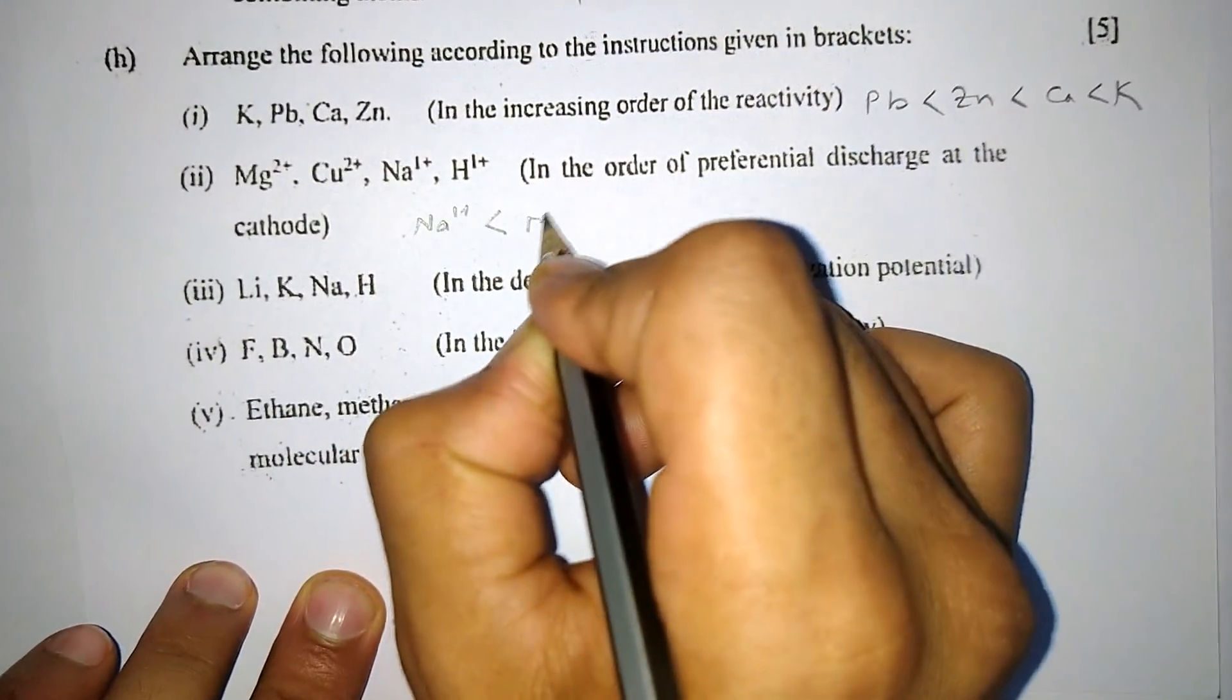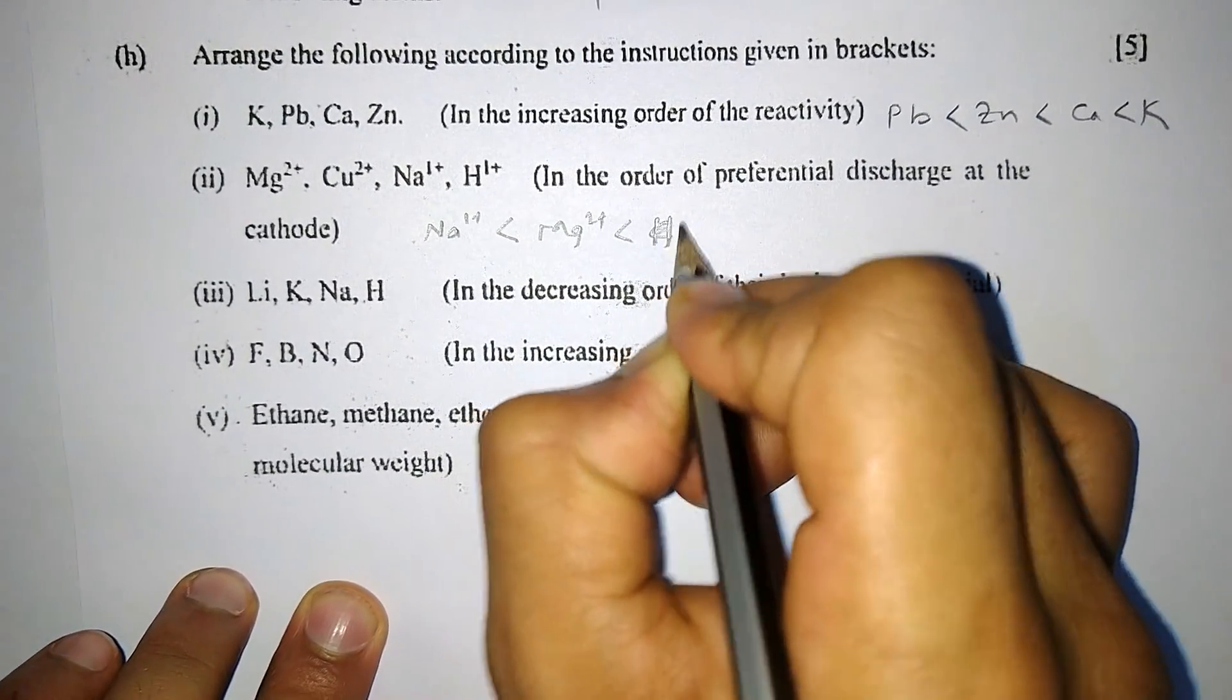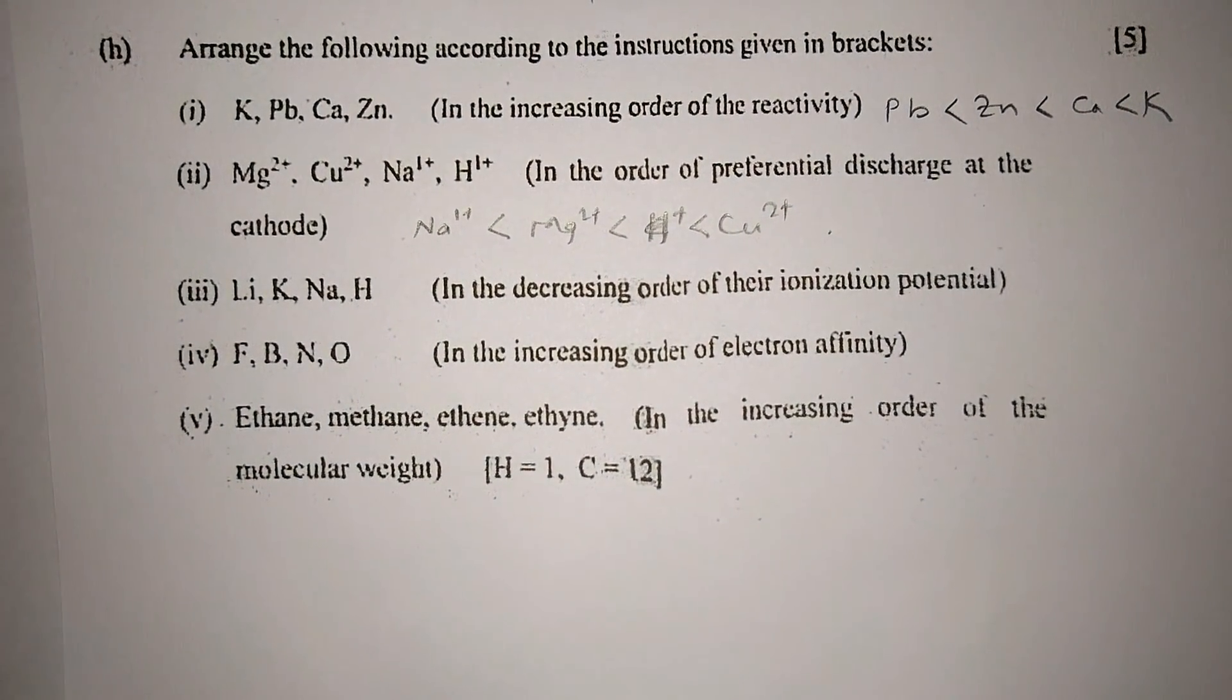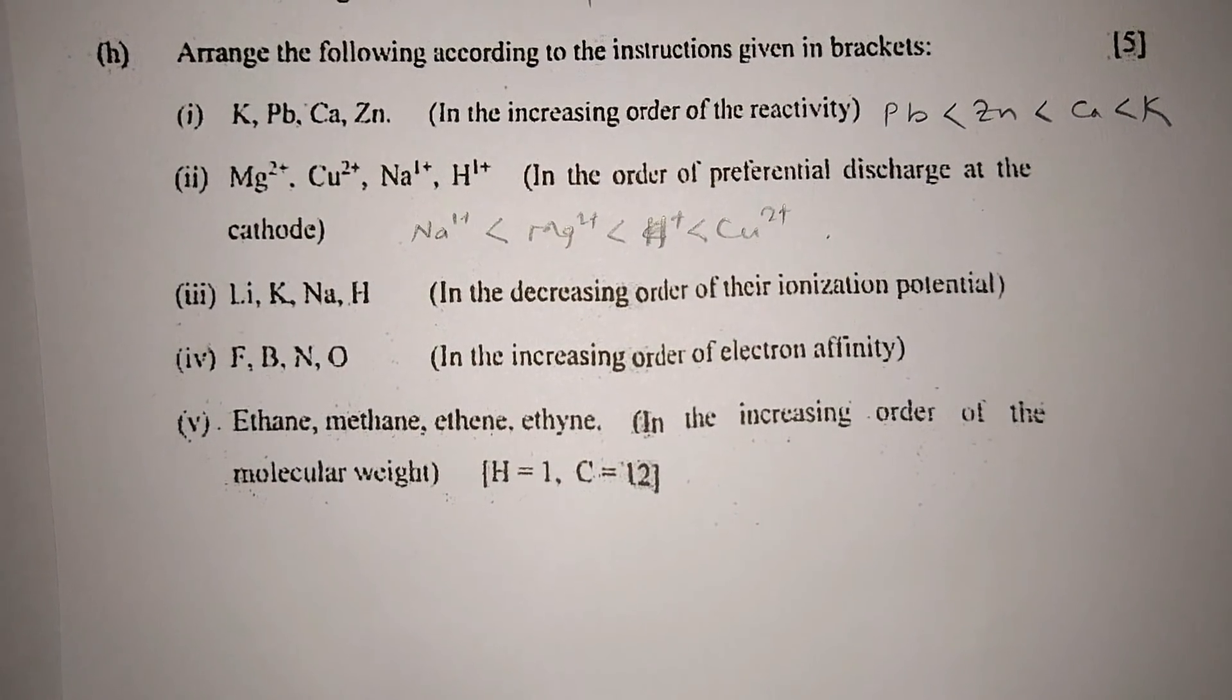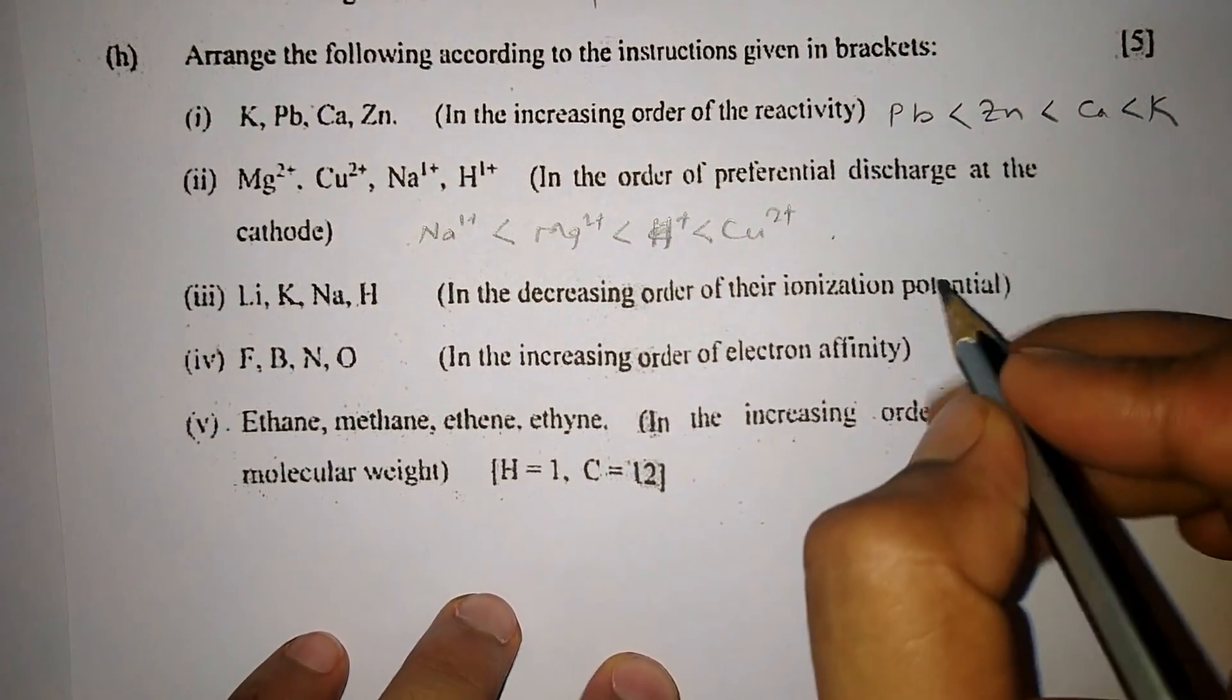Number two: Mg2+, Cu2+, Na+, H+ in the order of preferential discharge at the cathode. The least will be sodium, then magnesium, then H, and then we have copper.